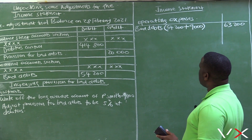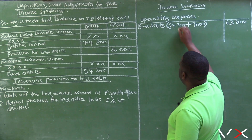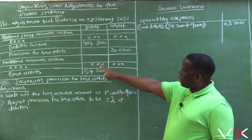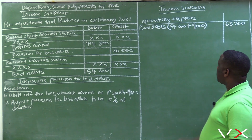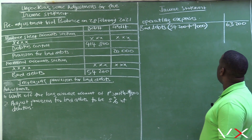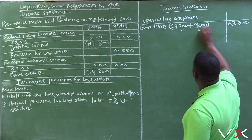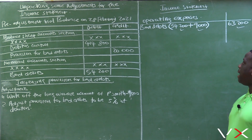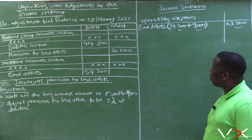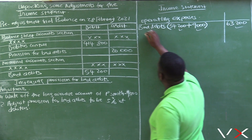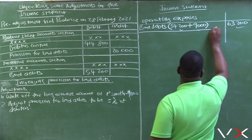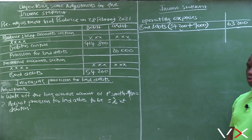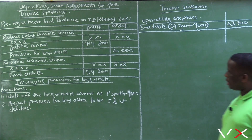It is very important for students when doing the income statement to make sure your workings are shown in brackets. This R54,200 comes straight from the pre-adjustment trial balance, and the adjustment adds R9,000. Sometimes in your memos these workings will also be allocated a mark, so it's very important to show the workings when doing these adjustments. Your bad debts from the first adjustment will be recorded under operating expenses.